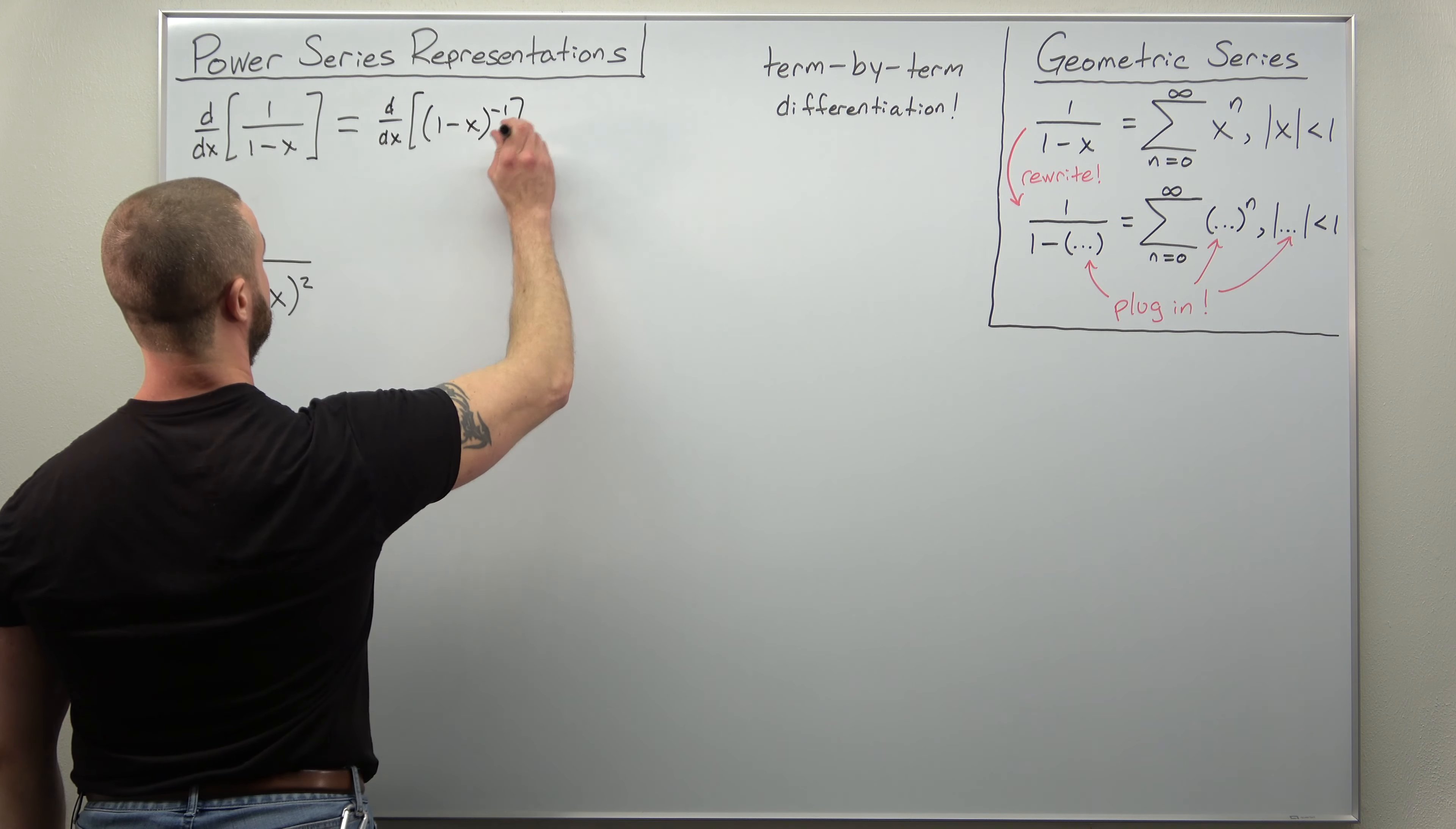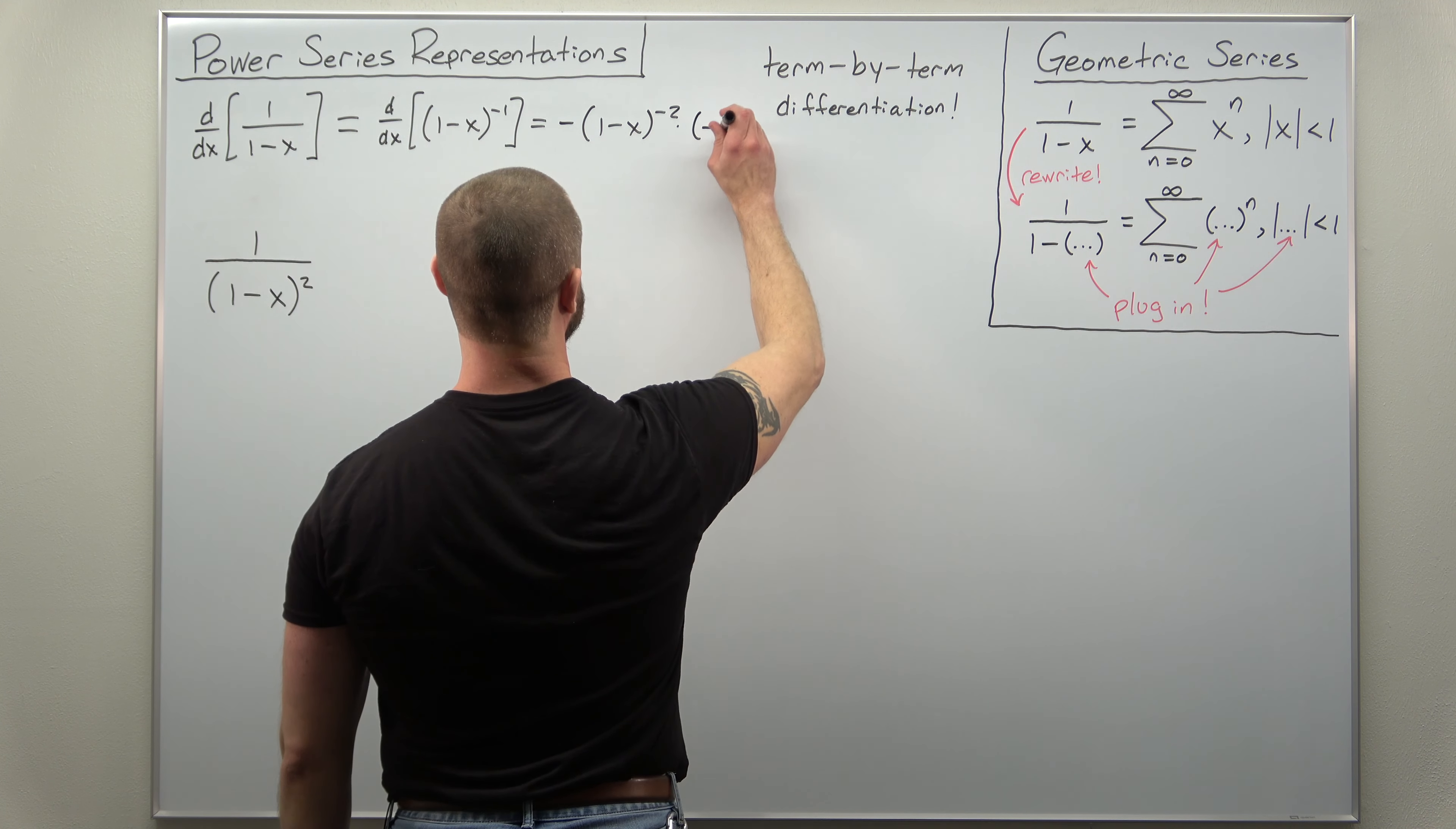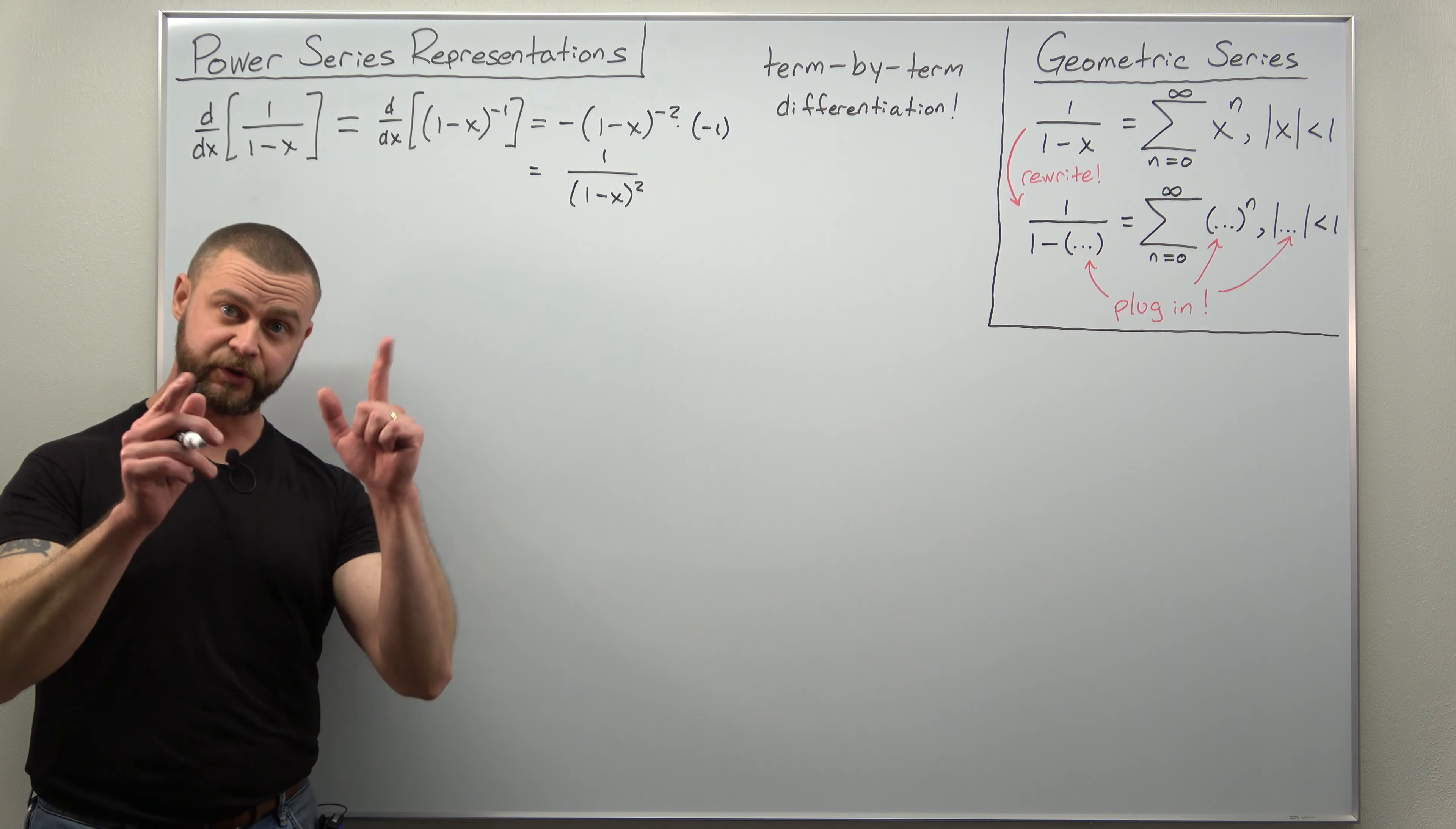We're going to go back to calc 1, don't use the quotient rule here. You can rewrite that as (1 - x) to the negative 1 and now you can differentiate that much quicker using the chain rule. Bring the power down, keep the inside the same, subtract 1 from that exponent, but don't forget to multiply by the derivative of the inside, which is negative 1. If you simplify that, the two negatives cancel out and you get 1 over (1 - x) squared in the denominator, which is exactly the function that we're looking for.